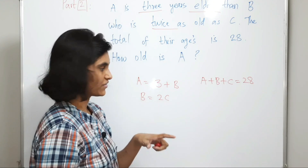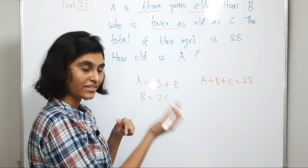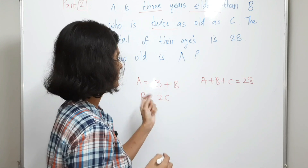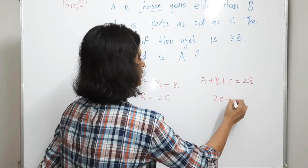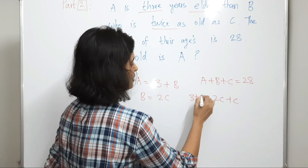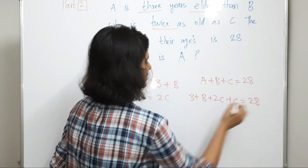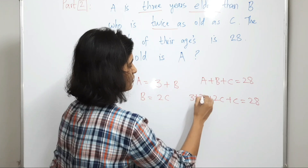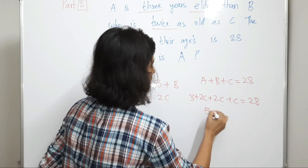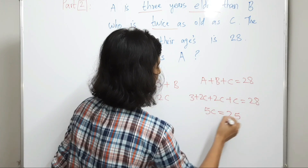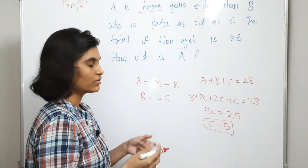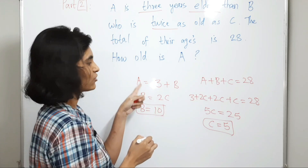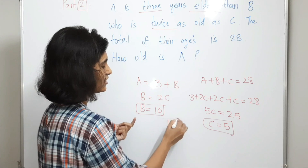Let's solve for C first, since B = 2C and A = 3 + B. Substituting into A + B + C = 28: (3 + 2C) + 2C + C = 28, which gives 5C = 25, so C = 5. Therefore B = 2 × 5 = 10, and A = 3 + 10 = 13 years.